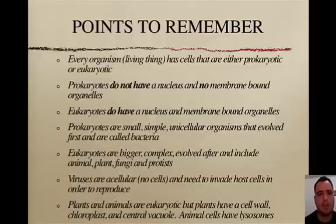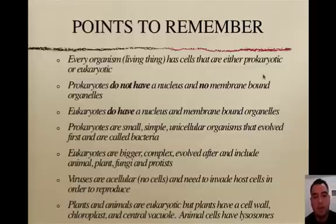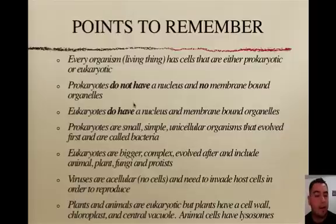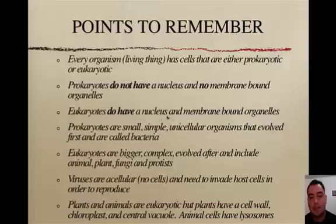Let's take a look at some points to remember. Every organism has cells — every living thing has cells that are either prokaryotic or eukaryotic. Prokaryotes don't have a nucleus and don't have membrane-bound organelles like mitochondria, chloroplasts, or ER. Eukaryotes do have a nucleus and membrane-bound organelles.